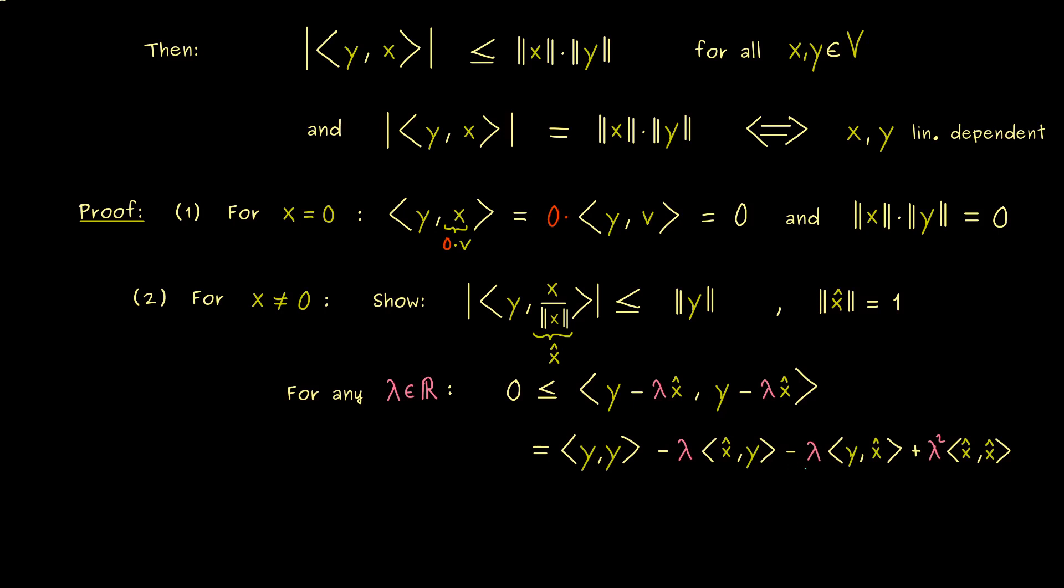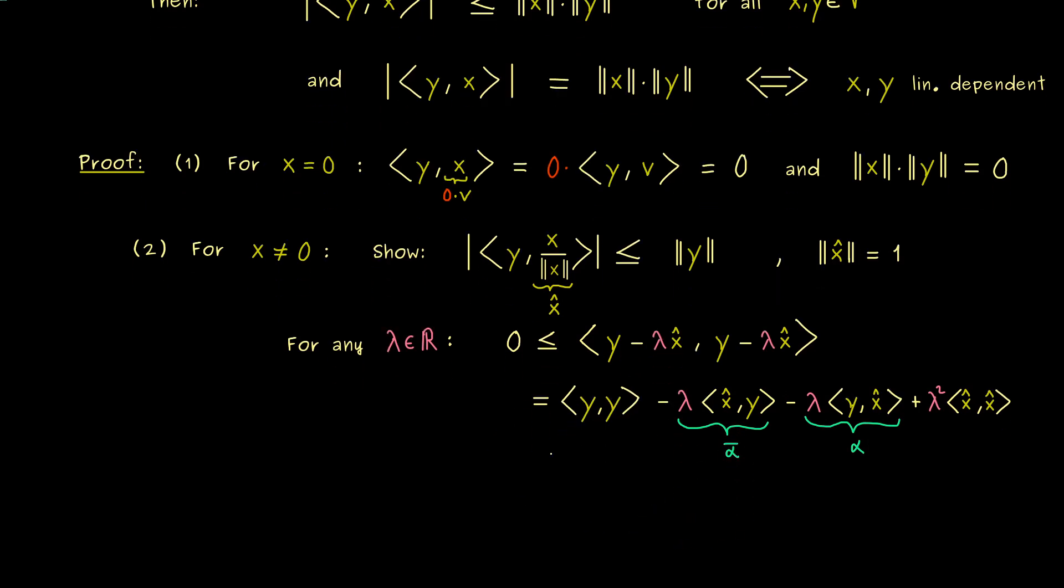This is not hard to see because if we call the third term simply alpha, then we can recognize that the second term here is the complex conjugate of alpha. Again, this is just using the properties of the inner product. Okay, and then I would say let's simplify this equation here. First, the last term is simply lambda squared. This is because we have the norm of x squared here and this is equal to 1. Okay, and then the middle term we can also put together. We have lambda times minus 2 times the real part of the inner product y with x hat.